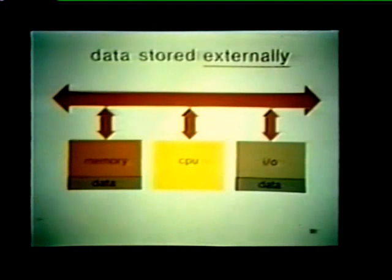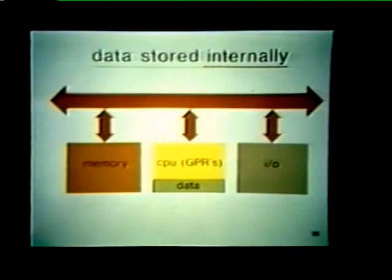In order to perform an instruction, the processor must step through a certain sequence of operations. The first step is to fetch the instruction from memory. The next step is to get the operand or operands — the data that the instruction is to act upon. This data may be stored externally in memory or in an I/O device register, or internally in one of the processor's general purpose registers.